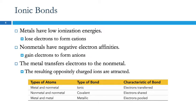So the metal will transfer an electron or two to the nonmetal. And as a result of that, you'll have a positive and a negative ion, and they are attracted by their opposite charges. That is the essence of an ionic bond, and the key word here is transfers — electrons are transferred from one element to another.